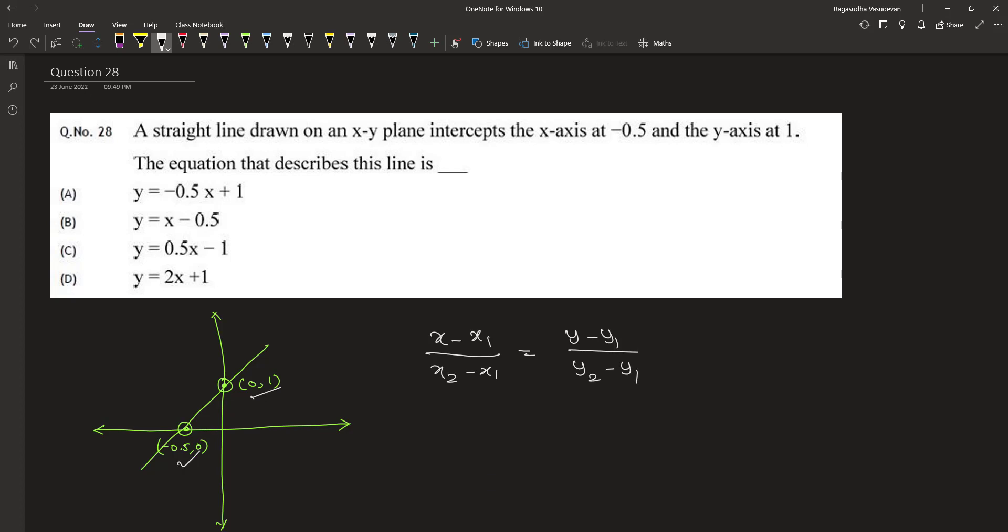By substituting these two points we get x plus 0.5 divided by 0 minus of minus is plus 0 plus 0.5 is equal to y minus 0 divided by 1 minus 0.